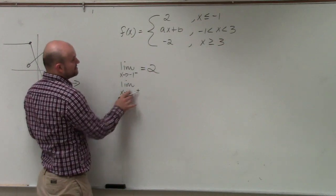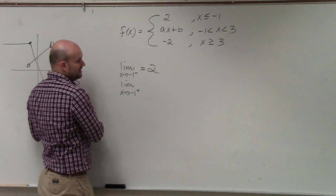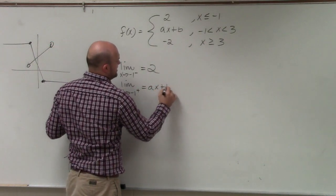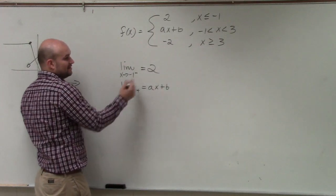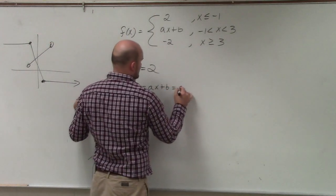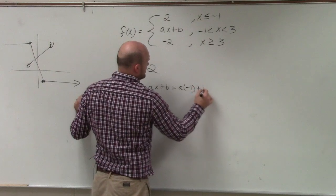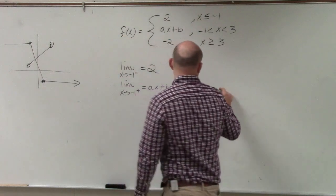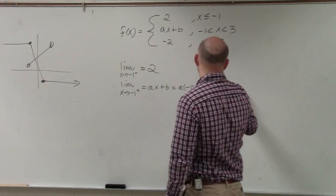And then from the right, we have AX plus B, so that's going to be AX plus B. Well, if we evaluate at negative one, that's going to be A times negative one plus B, which equals negative A plus B.